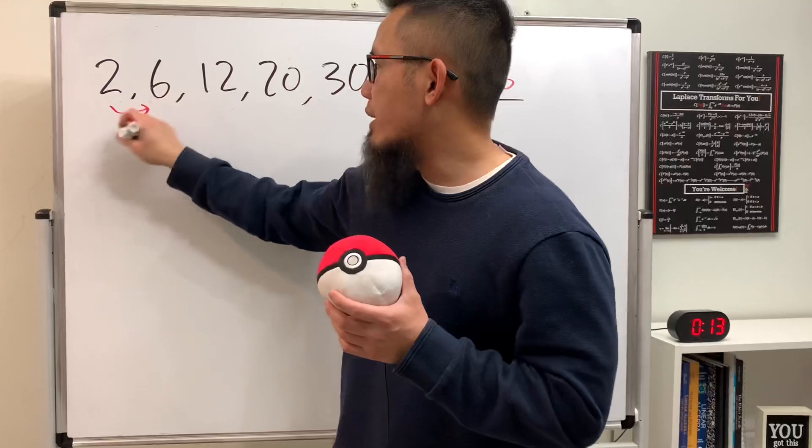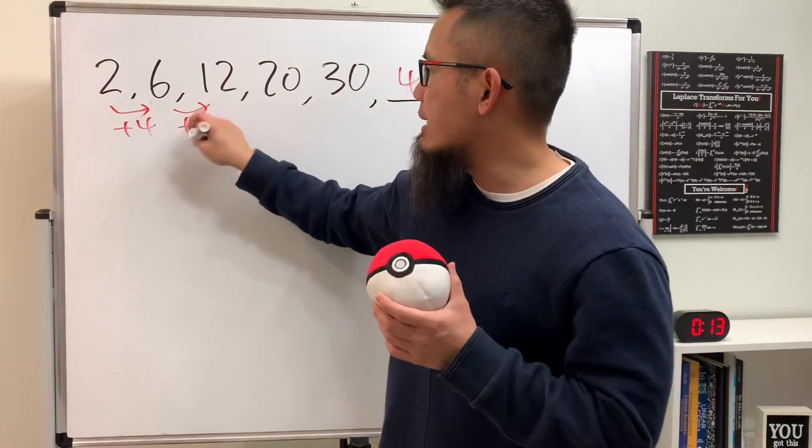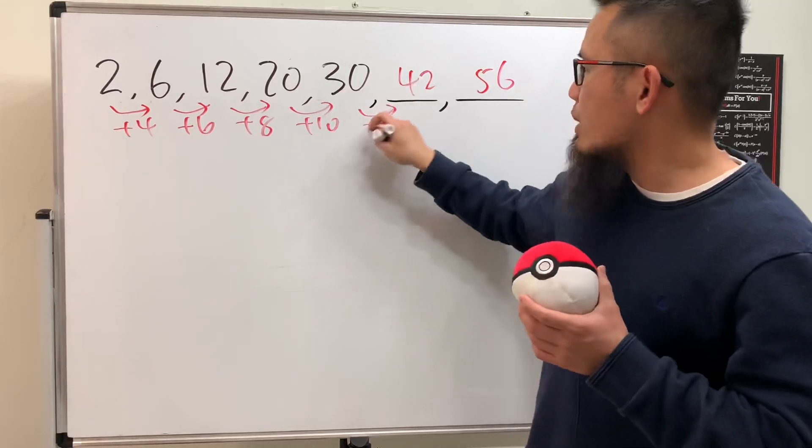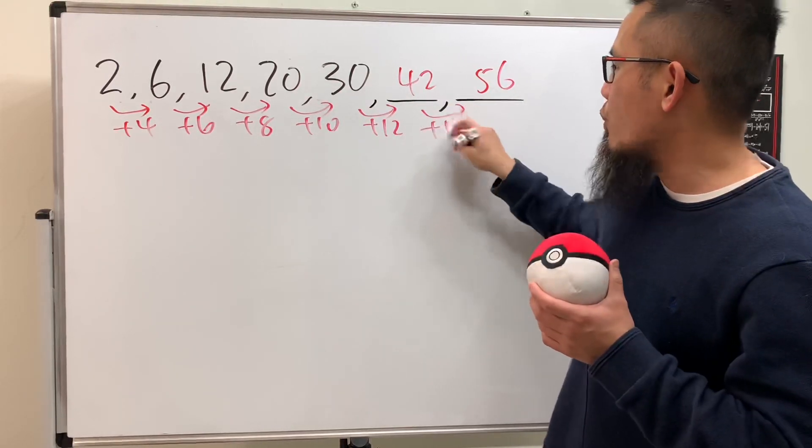How did we do it? Well, check this out. This right here is plus 4, and then plus 6, and then plus 8, and then this right here is plus 10, and then the next one is plus 12, and the last one is plus 14.